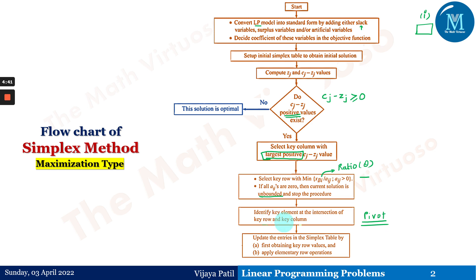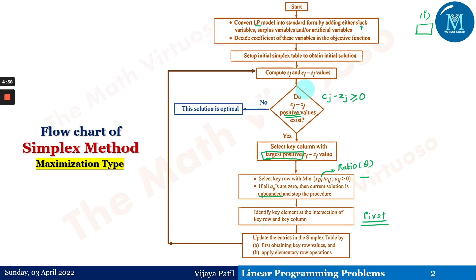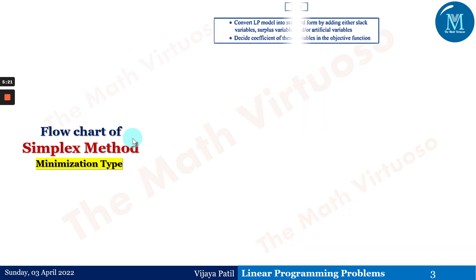Update the entries in the simplex table by first obtaining key row values and applying elementary row operations. After that, move again to computing Zj and Cj minus Zj values. The same flowchart procedure repeats until all Cj minus Zj values are negative or zero. As soon as we get that, we stop, and that is our optimal solution. This entire procedure is for the maximization type.